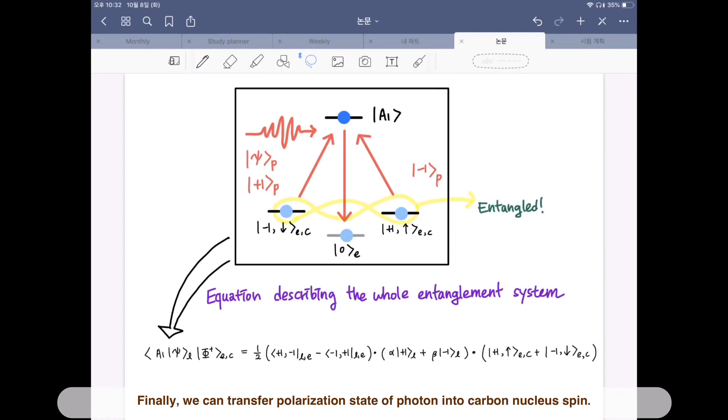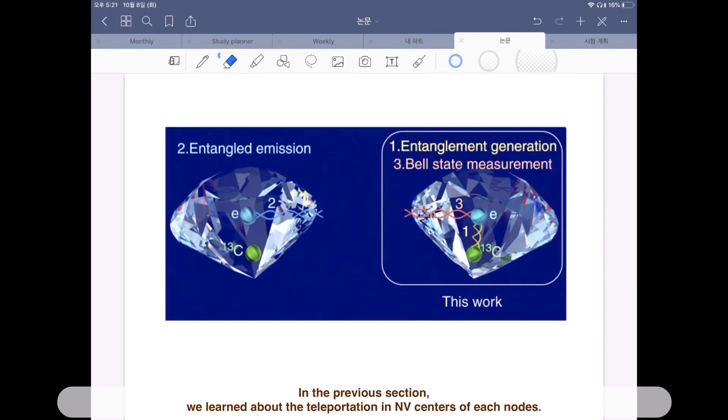Finally, we can transfer polarization state of photon into carbon nuclear spin.